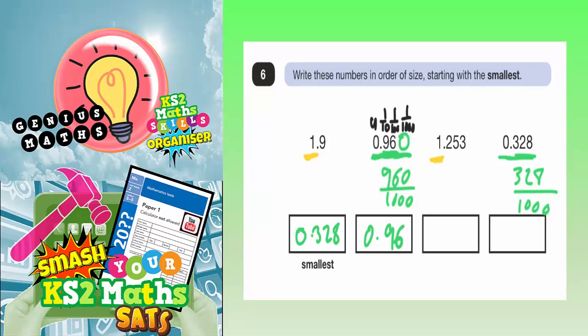So we've got 1.9 and 1.253. But remember this little trick that we talked about earlier with place value. So the 1 is 1 unit, 9 tenths. But don't forget that the columns afterwards would be hundredths and thousandths.